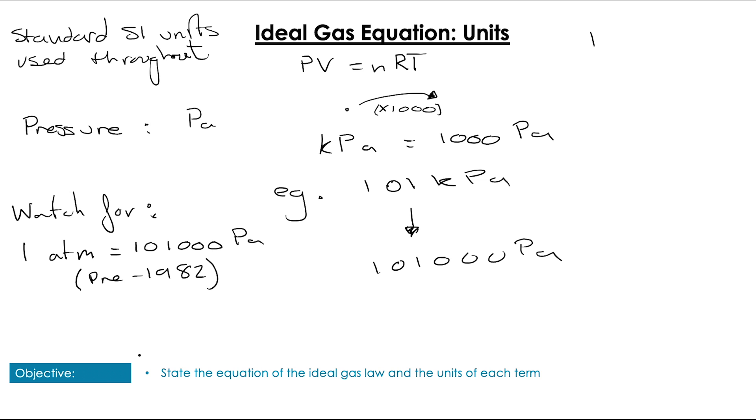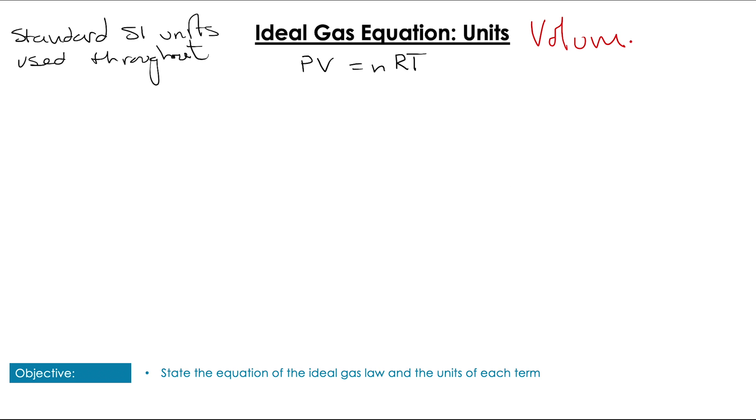So do just watch. If you see 1 atmosphere, it's just referring to 101,000 pascals. Also, 1 bar, the modern equivalent of this, is 100,000 pascals, and that is of course STP pressure. For those that are curious or have pumped up a bike tire, they'll know the term PSI. So 1 psi is equivalent to 6,894.76 pascals, just for a reference scale there.